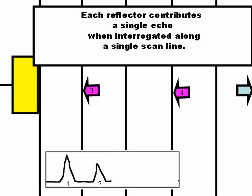Another assumption is that each reflector produces only one echo. This is not always true — sometimes the reflector remains vibrating and produces more than one echo. The machine cannot account for this; it assumes each reflector produces only one echo, but this does not always happen.